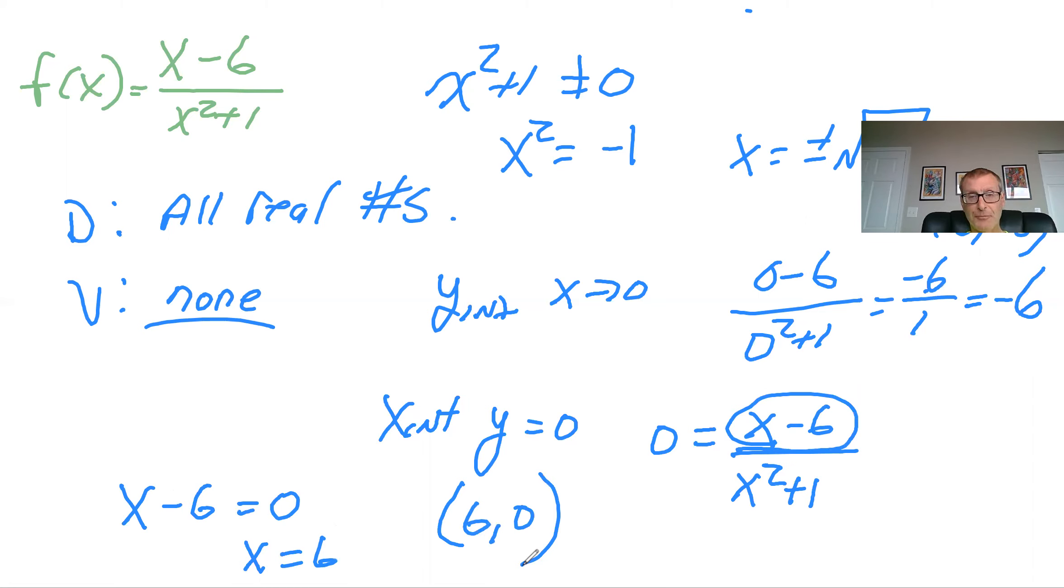So I gave you three examples for domains, which we've talked about already, the intercepts, and now the vertical asymptotes. So the next lecture will focus on what we call the horizontal asymptotes. Those are quite a bit more challenging to calculate. And I'll introduce this idea of an oblique asymptote as well.